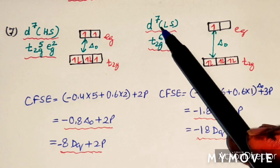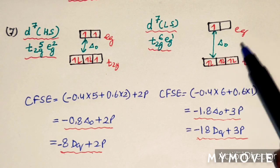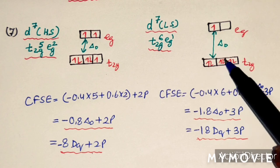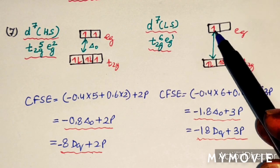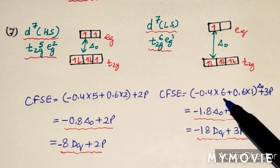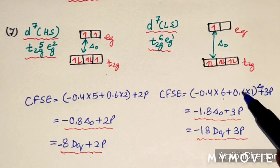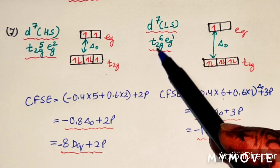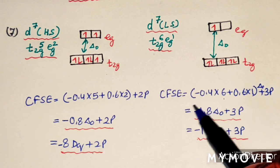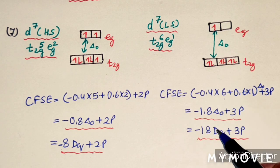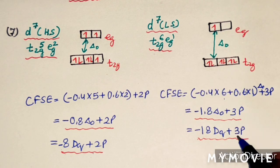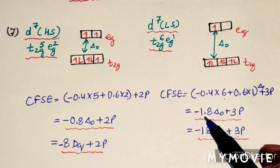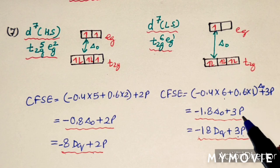For D7 low spin complex (larger delta O), electrons fill giving configuration T2G6EG1. There are three paired electrons. CFSE = −18 DQ + 3P, or −1.8 delta O + 3P.